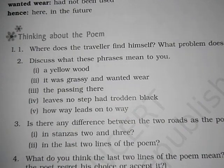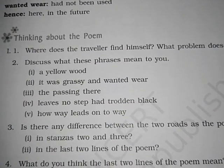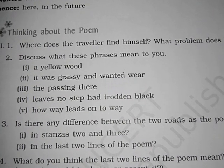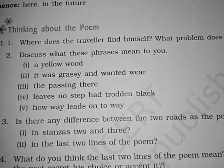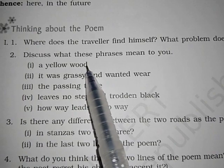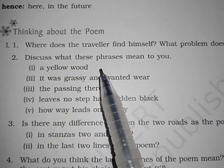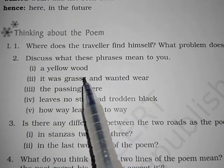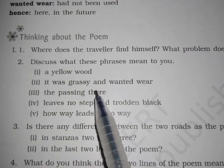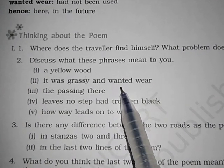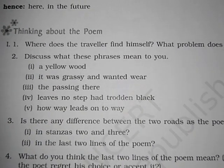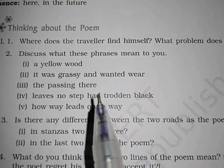The second question: discuss what these phrases mean — 'a yellow road,' 'it was grassy and wandered where,' 'the passing there had leaves no step and trodden black,' and 'how way leads on to way.' A yellow road means it's a forest road full of dropped grasses and leaves. 'It was grassy and wandered where' means it is full of grass and has not been traveled for a lifetime — that road is not used for a long time.